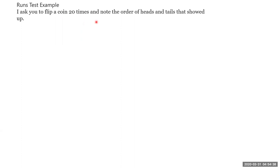Run test example. I ask you to flip a coin 20 times and note the order of heads and tails that showed up. First of all, you have to give me the data. Tomorrow you are bringing the data. But I doubt the data. Let's say you bring this data. There are 20 values. 1, 2, 3, 4, 5, 6, 7, 8, 9, 10, 11 heads are there. 11 heads and 9 tails are there.